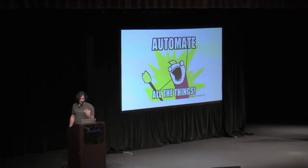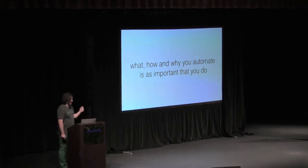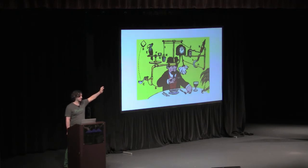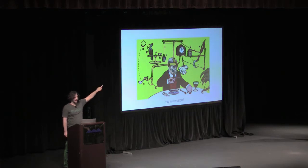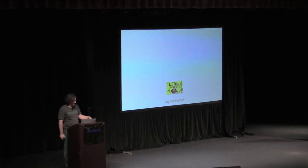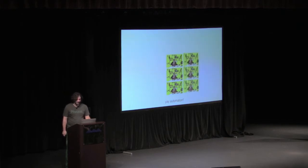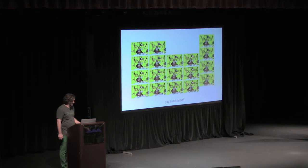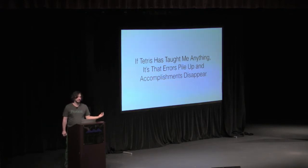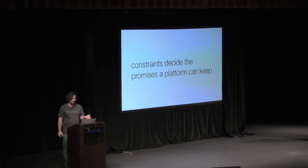I used to believe very strongly you should automate all the things. I don't believe that now. What and how and why you automate is as important as that you do. That's not automation — that's manual toil with some tools. That, my friends, is automation. The architecture matters. The choice of what you automate matters. Maybe you take that robot and put it in a container, schedule it on some things, and it'll all be fine.